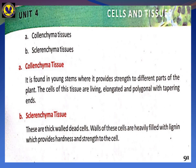On page 91, there are two types of supporting tissue: collenchyma and sclerenchyma. Collenchyma tissue is found in young stems where it provides strength to different parts of the plant. The cells of this tissue are living, elongated and polygonal with tapering ends. Sclerenchyma tissue consists of thick-walled dead cells. The walls of these cells are heavily filled with lignin, which provides hardness and strength to the cell.